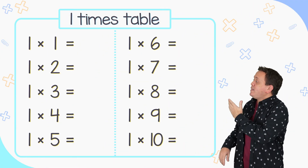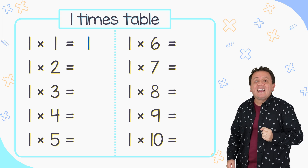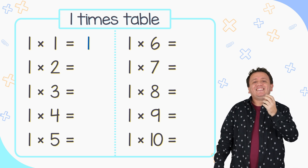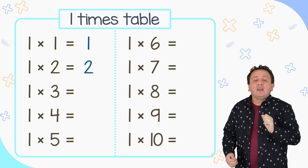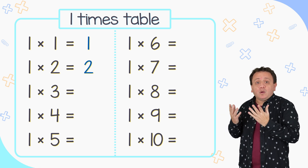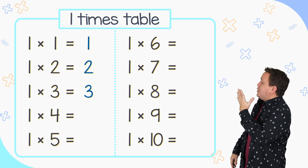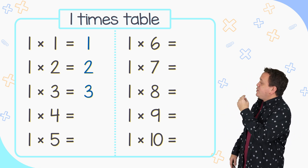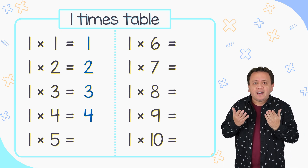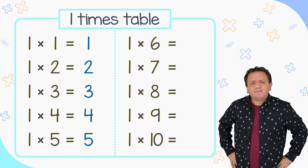1 times 1 equals 1 and 1 times 2 equals 2. 1 times 3 is equal to 3 and 1 times 4 is equal to 4. 1 times 5 equals 5.